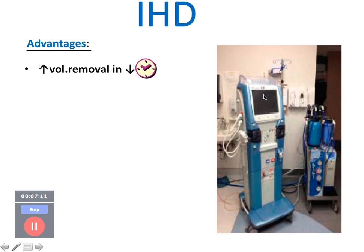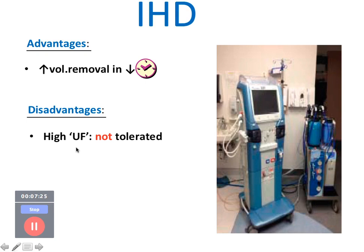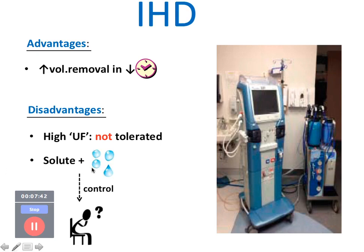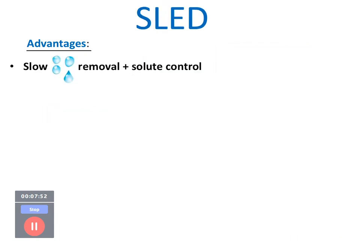Intermittent hemodialysis is the typical dialysis done for chronic kidney disease patients on an OPD basis. Its advantage is that it removes large volumes in a short time. The disadvantage is that since it removes more fluid quickly, hemodynamic instability becomes a problem — patients with cardiac issues or those who are hemodynamically unstable may not tolerate it, and having precise control over solute and fluid removal becomes difficult.